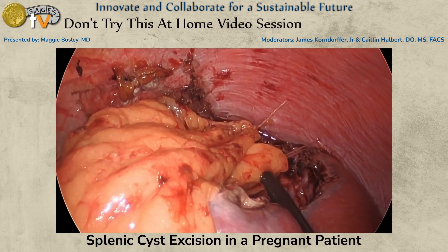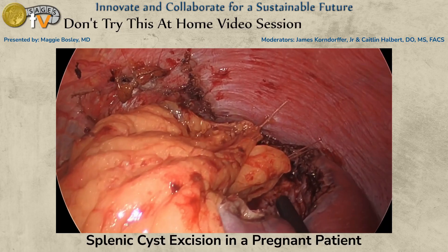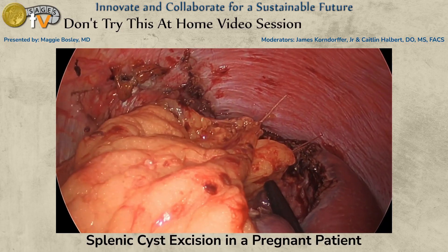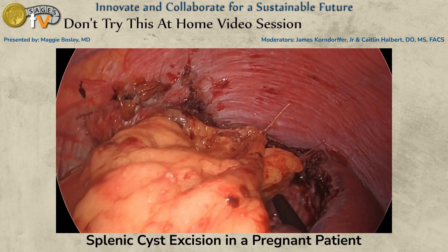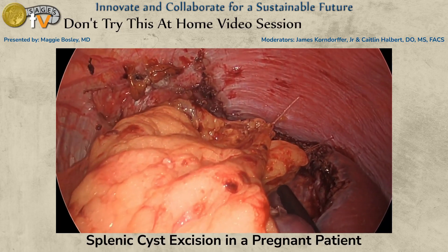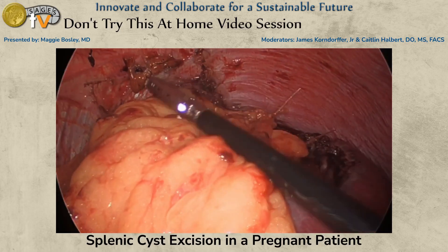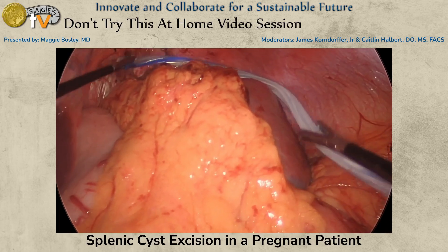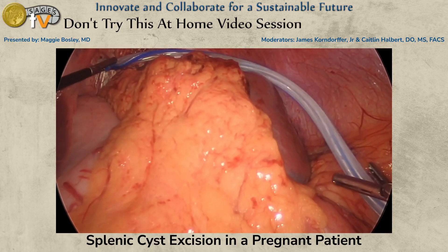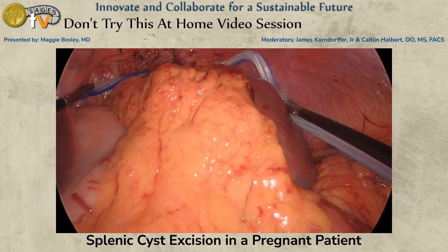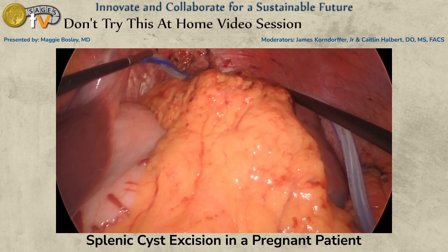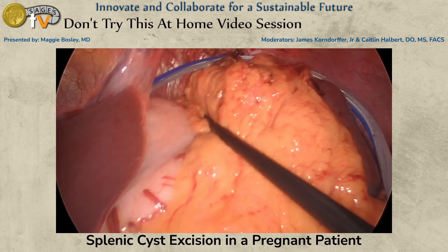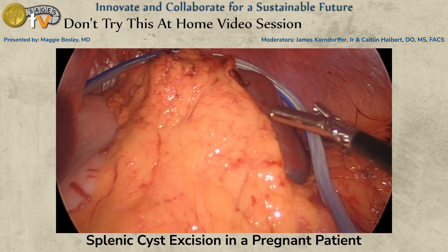After securing the omentum in several places, we added fibrin sealant to assist with hemostasis and to help keep the omentum in position. We then placed a 19 French Blake drain and closed in standard fashion.